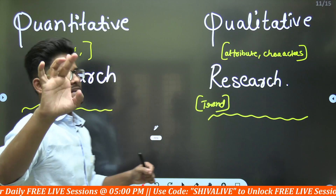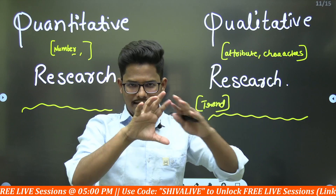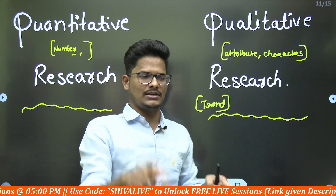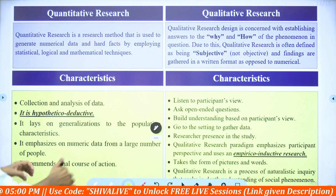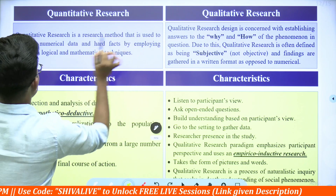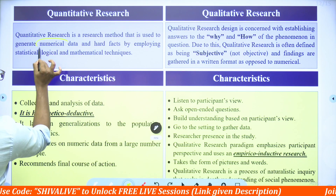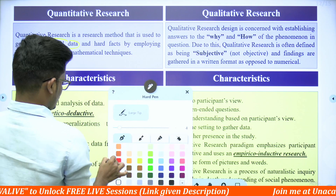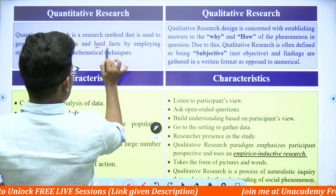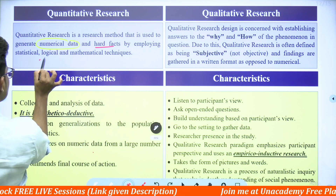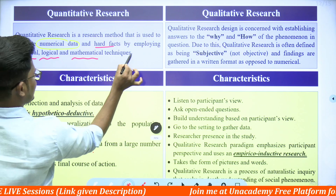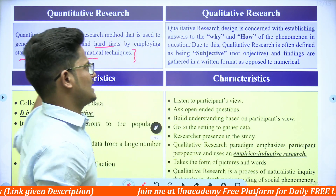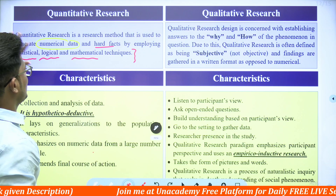Now let us look at the questioning areas. I will show you the keywords — the clear-cut difference between both types and when those words are used, in what context, and what they mean. Quantitative research is a research method used to generate numerical data and hard facts, employing logical, statistical, and mathematical techniques to analyze this type of research. Statistics, logical, and mathematical methods will be used.